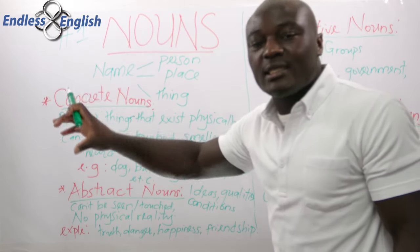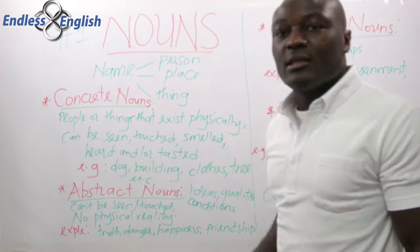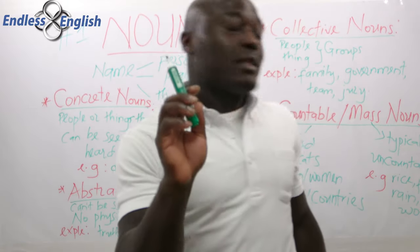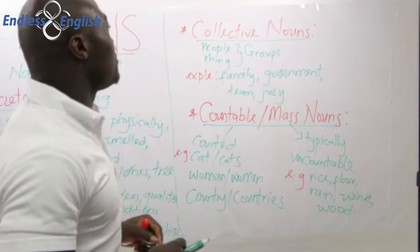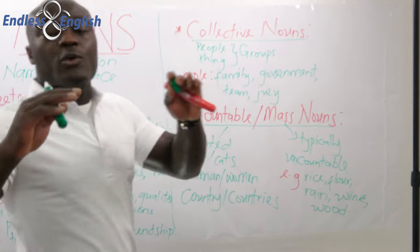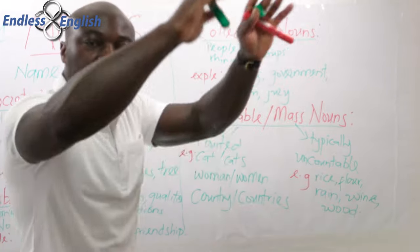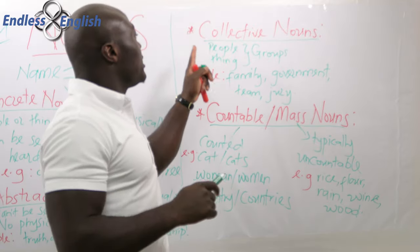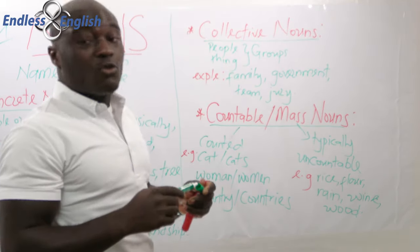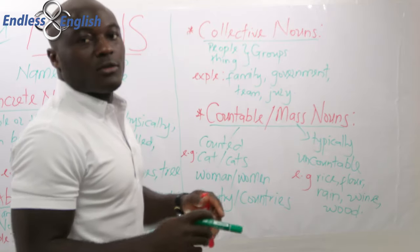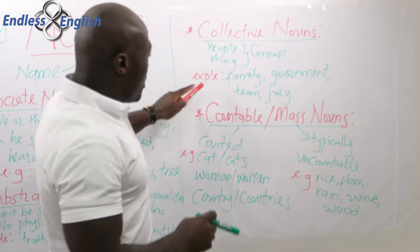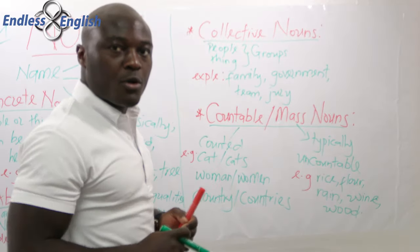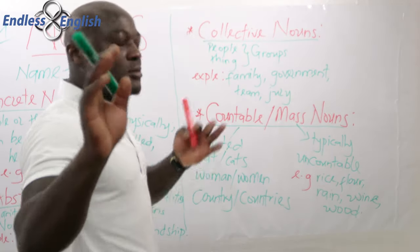The next type is collective nouns. When you hear the word 'collective,' it means to put things in a group. So collective nouns are people or things that are in groups. For example, a family is a collective noun because you have a group of people — father, mother, children, aunties, and so on.